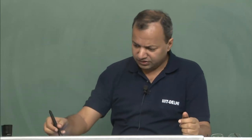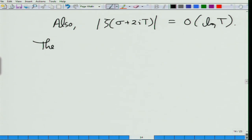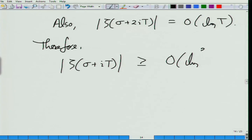At height 2t, we use the result that on the entire boundary region |ζ(z)| is order log t for σ between just less than 1 and 2. So at height 2t, ζ(σ + 2it) is bounded by order log t. Therefore plugging everything in: the lower bound on |ζ(σ+it)| comes from 1 divided by (log⁹t)³ times log t — that is 1 over log^(27+1) t = 1 over log^28 t.